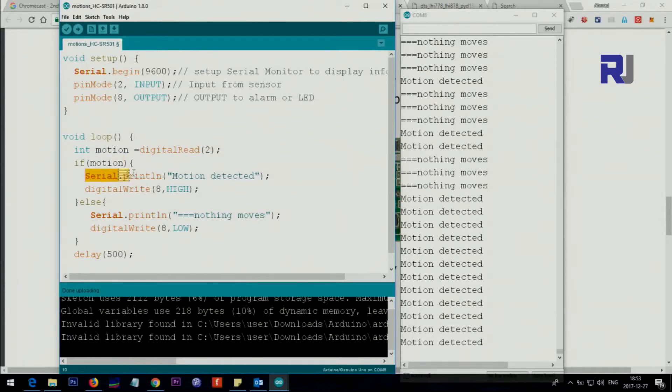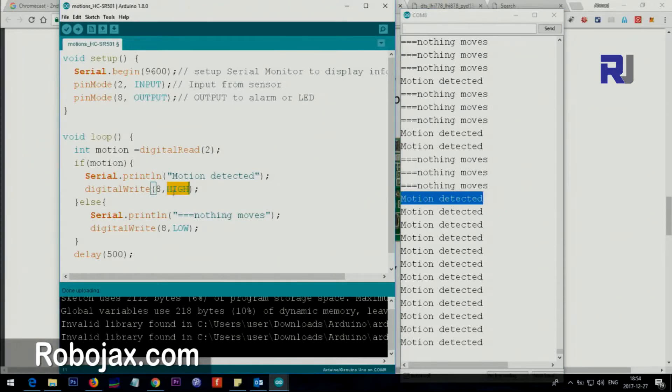Automatically then we say print this on the screen: 'motion detected', which will print this text. Also we say at the same time set pin 8 high, so if this is connected to an LED, the LED will be turned on, alarm or some servo, whatever you can control. Then else, otherwise, just print 'nothing moves' and then set pin 8 which was high, set it to low.